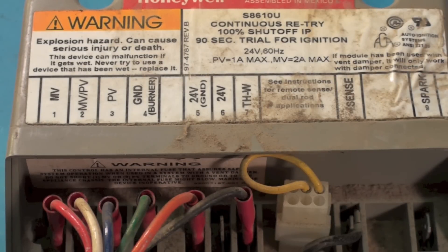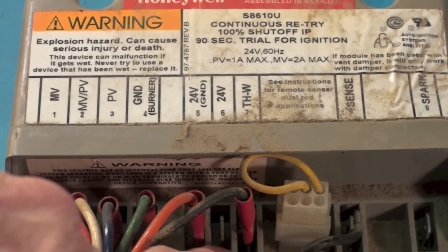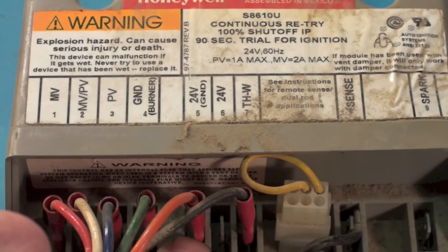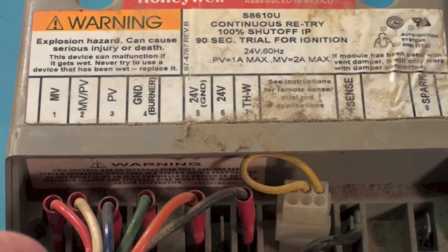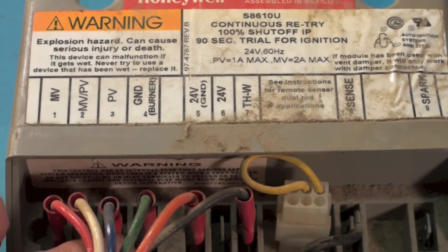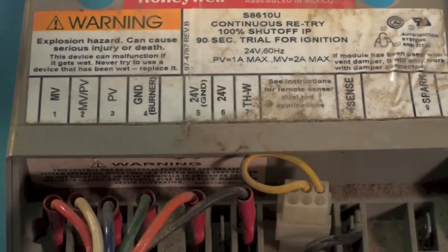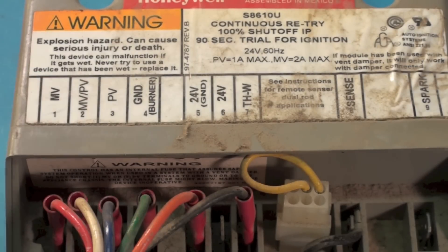So if I got power coming in to my terminals on the 24 volt side, then I should be able to go from MVPV to PV and I should have power there. If I do have power, continue to the gas valve. If I don't have power, the control itself has failed. Let's see if we can get this one fired off.